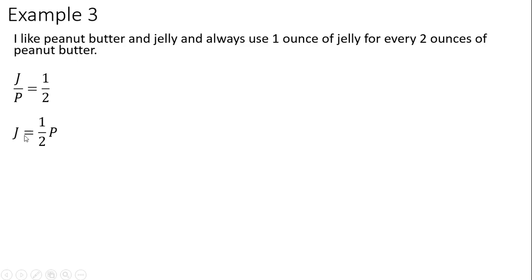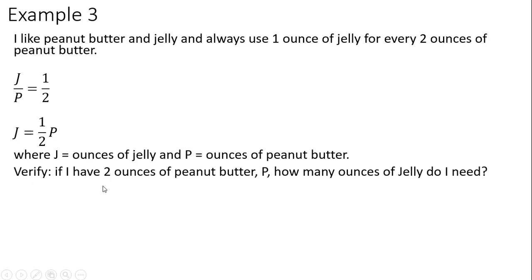Let's first verify. If I have two ounces of peanut butter, if P is two, how many ounces of jelly do I need? I would only need one ounce of jelly, and that is exactly consistent with what we have in our word problem. If I have two ounces of peanut butter, I should get back one ounce of jelly from our equation, and I do.